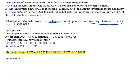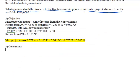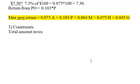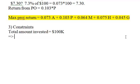Now let's talk about the constraints. These three guidelines will turn into constraints, but we should also have a constraint for how much money we have to invest. The total amount invested should equal $100,000, which is the sum of all five investment amounts: A + P + M + H + G = $100,000.